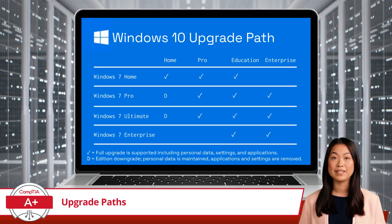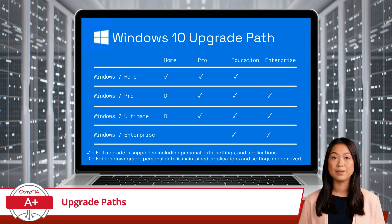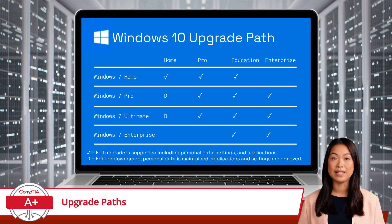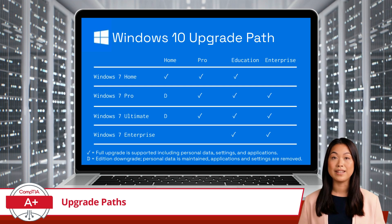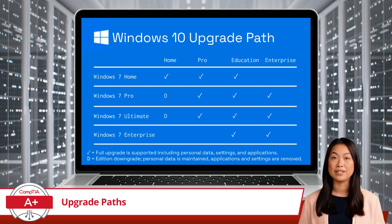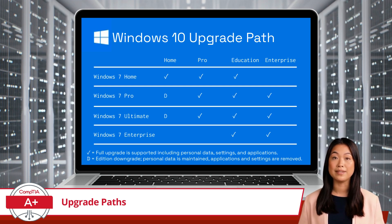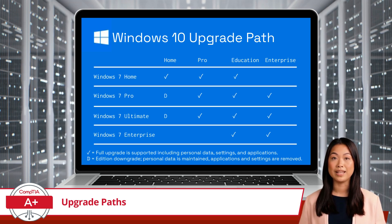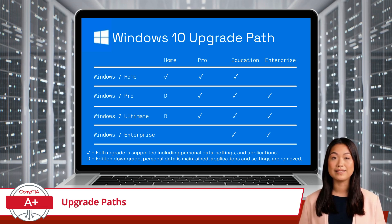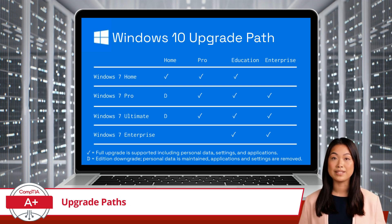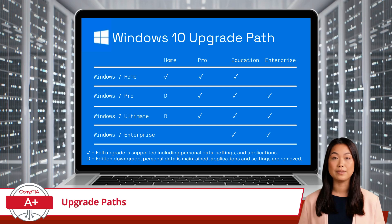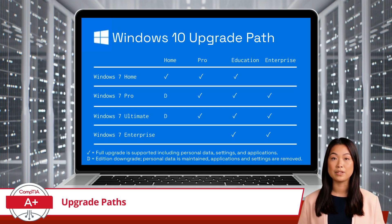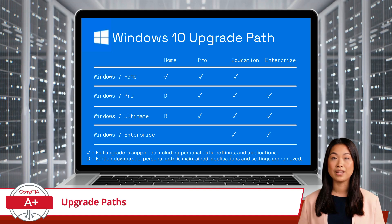For instance, Windows 7 users can refer to these tables to verify if their system supports an in-place upgrade to Windows 10. If the scenario meets the criteria, an in-place upgrade can proceed, simplifying the process by keeping existing files and applications intact. However, if the scenario does not meet the requirements, the tables will indicate the need for a clean install, which involves wiping the hard drive and starting fresh.